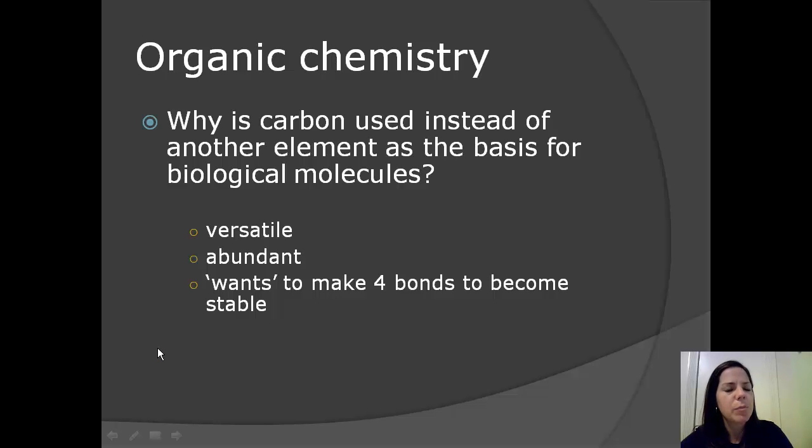Organic chemistry. Why is carbon used, instead of another element like boron or phosphorus, as the basis for biological molecules? So there are some key points. Number one, carbon is very versatile. Number two, carbon is very abundant. You can find it in many places in the environment. And finally, carbon wants, in its chemical life, to make four bonds to become stable.